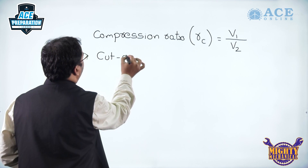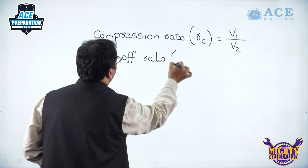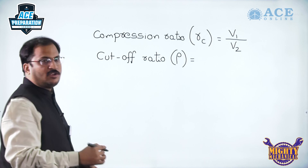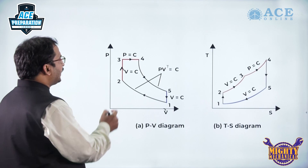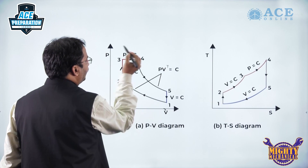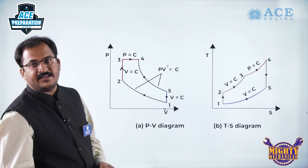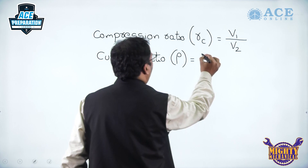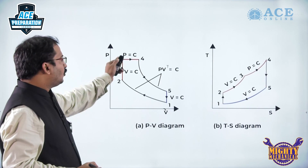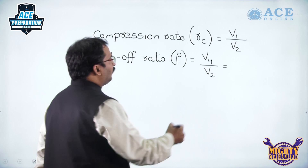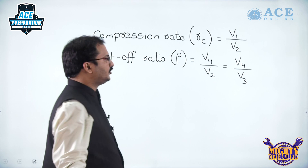The cutoff ratio is denoted by ρ (rho). This is the volume at the end of heat addition divided by the volume at the beginning of heat addition. Heat addition ends at point 4 and starts at point 3, so we write V4 by V3 for the cutoff ratio (since V2 = V3 in the constant volume process).